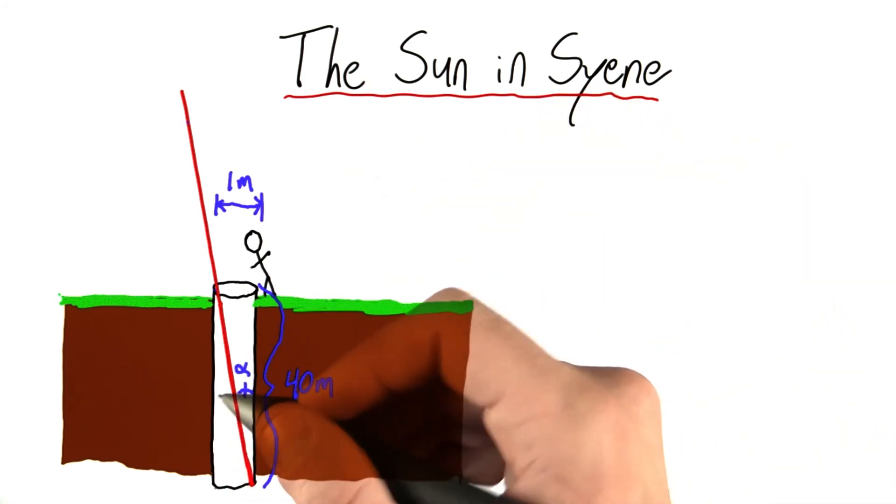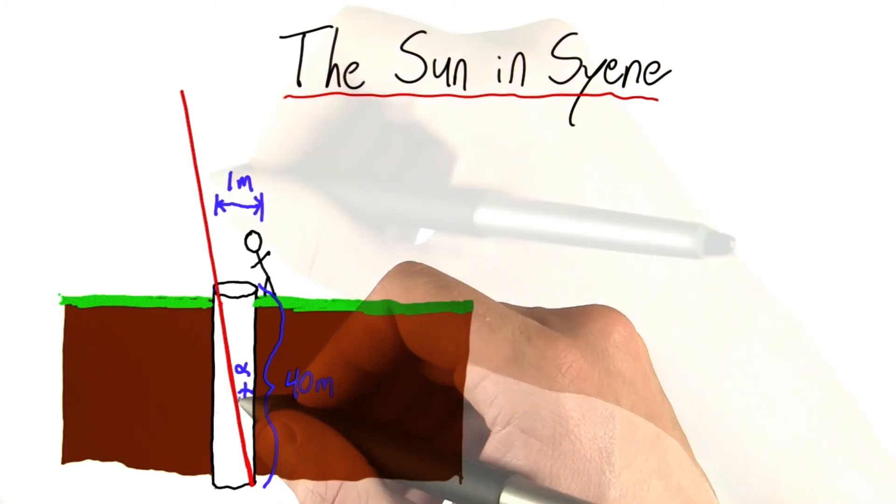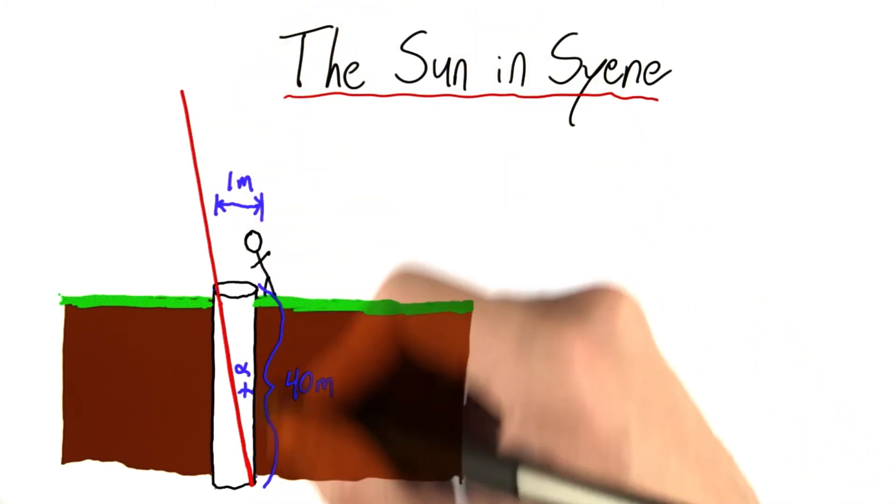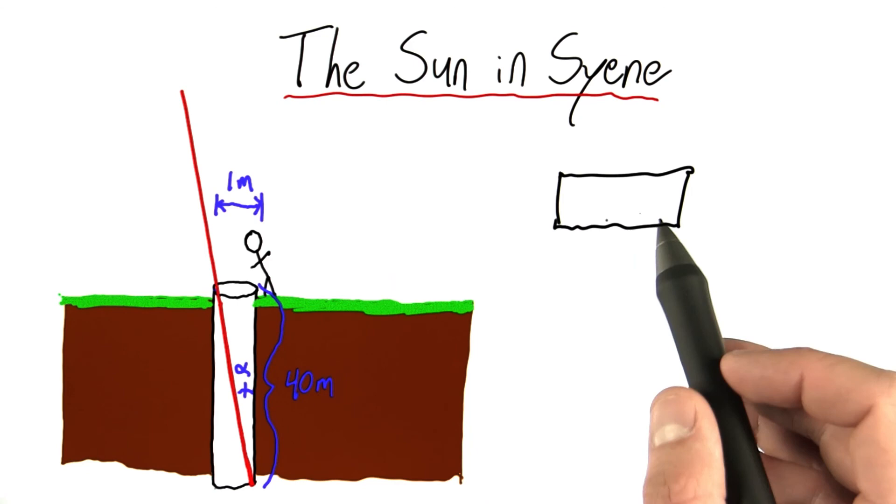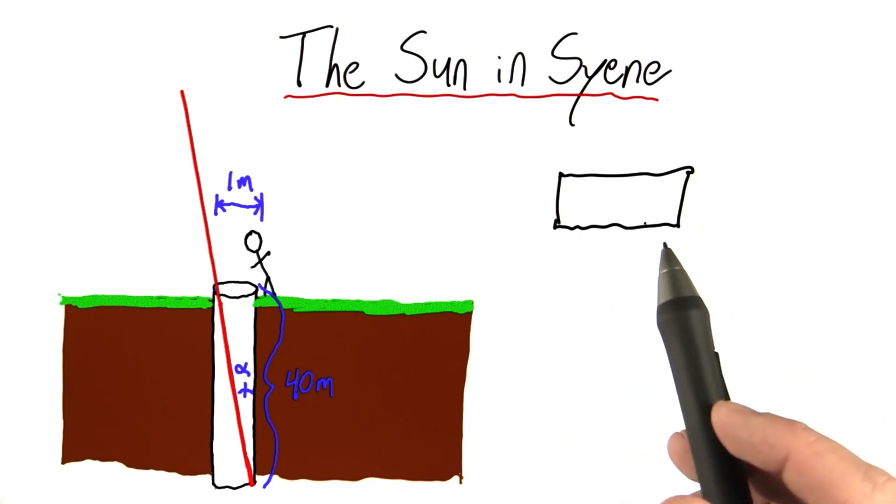Using your new trig skills, I bet you can tell me what this angle alpha is that this ray is making with the vertical. Enter your answer in this box rounded to two decimal places. And remember, Google is your friend.